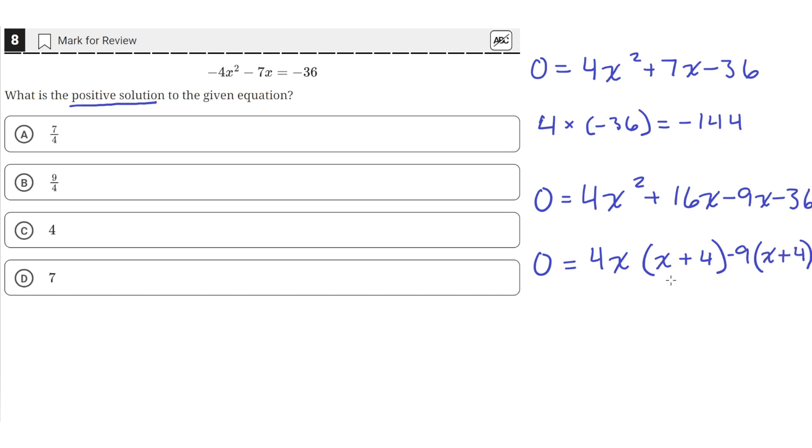So now, we can factor one more time by taking this term common out. So 0 equals x plus 4 times the 4x and minus the 9. So if we simplified this out, you would still be able to get this term right here. You would just multiply this with x plus 4 and negative 9 with x plus 4. So it would give us the original equation back. But now, we have a fully factored quadratic.